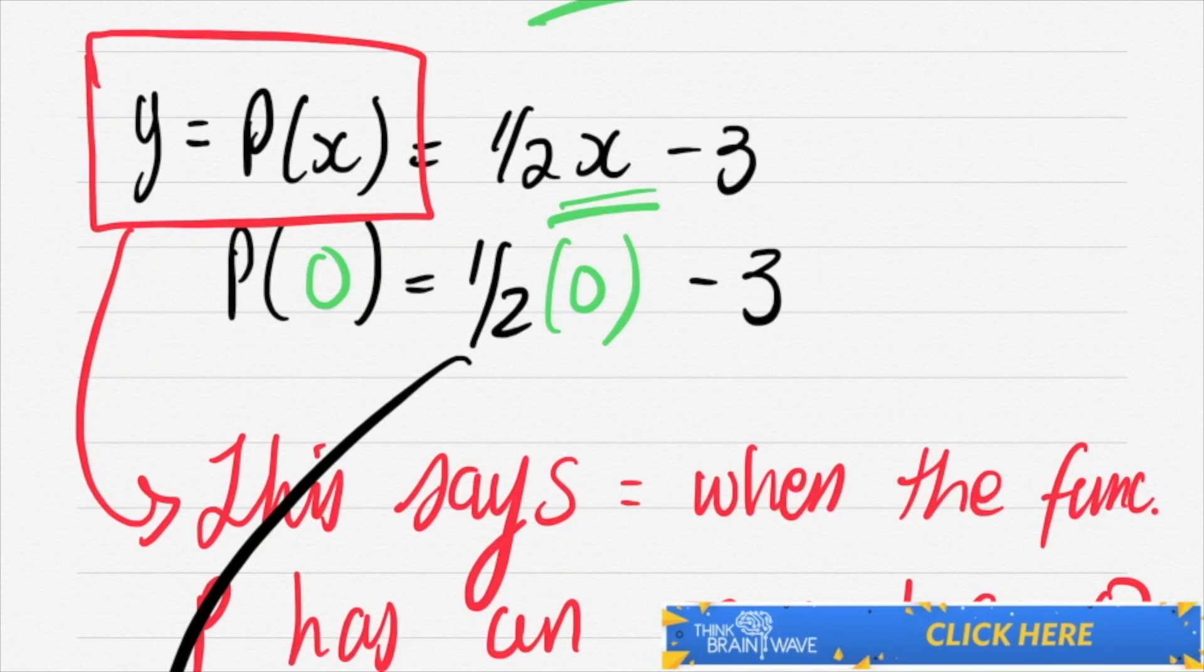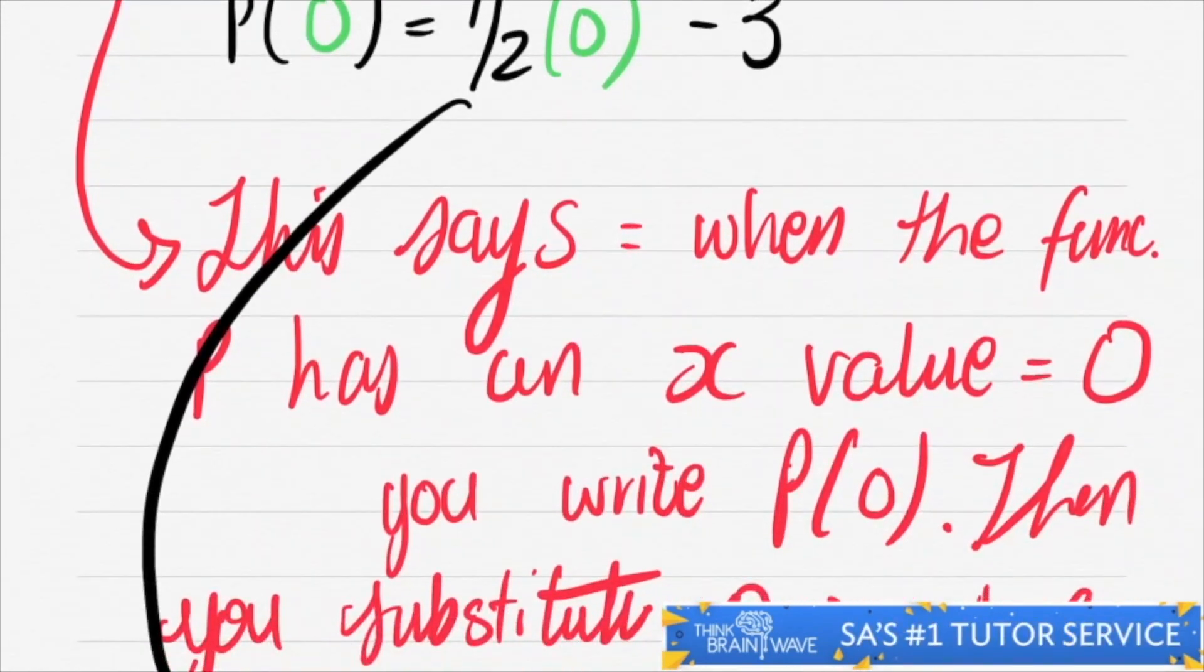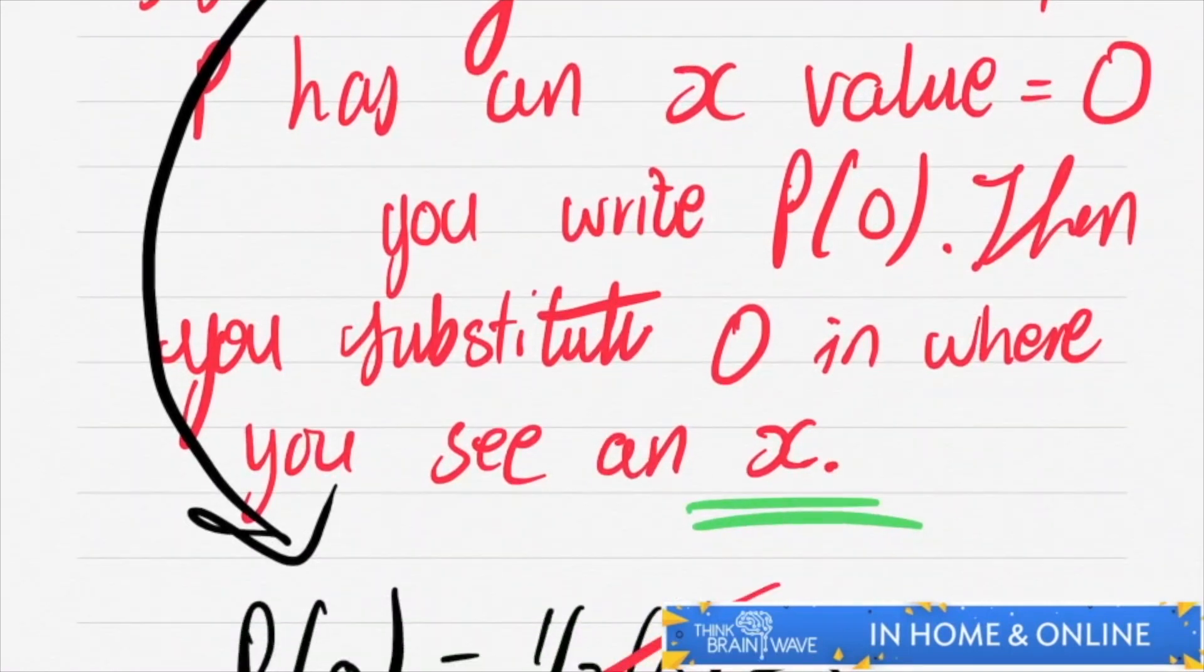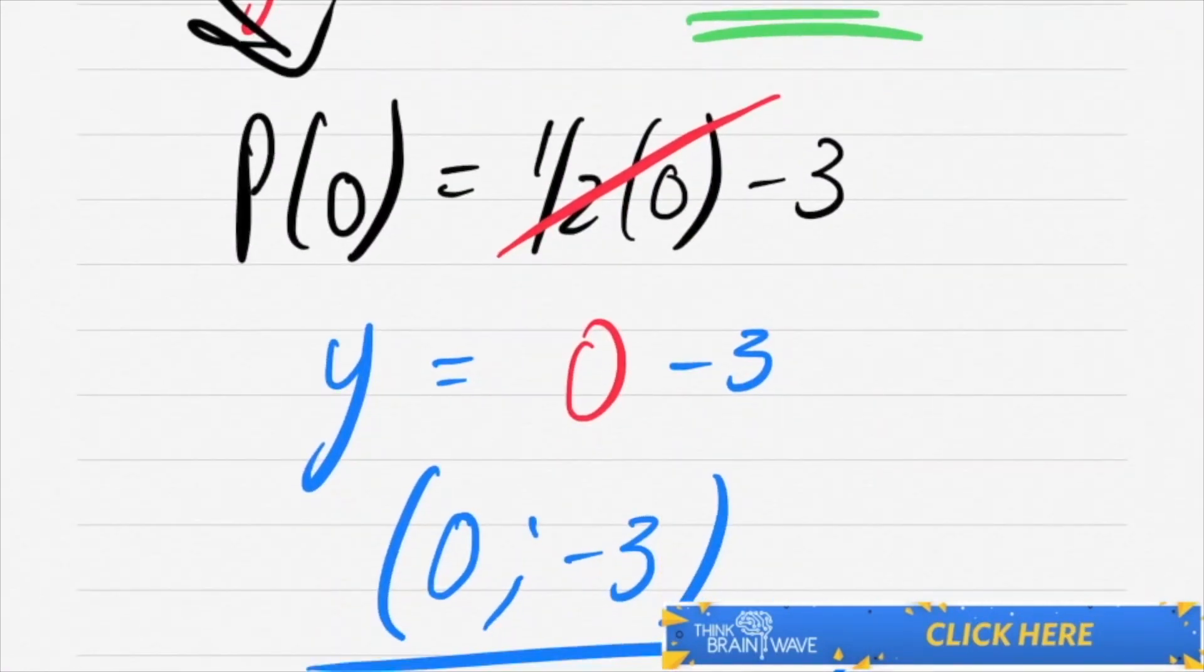Let's have a look at what we've written here. This says when the function p has an x value equal to zero, you write p(0). Then you substitute zero in where you see an x. You then get this answer, y is equal to zero minus three, and your coordinates, which are (0, -3).